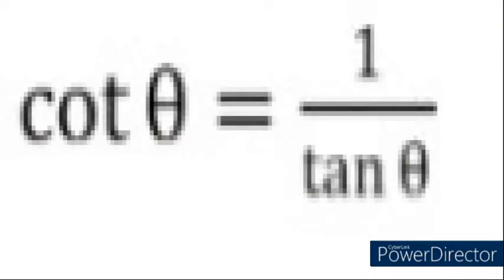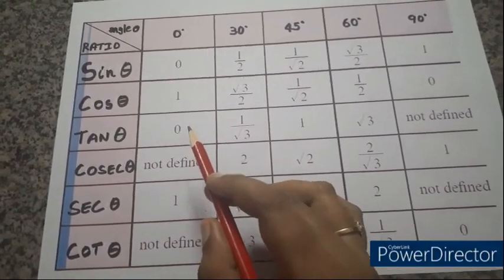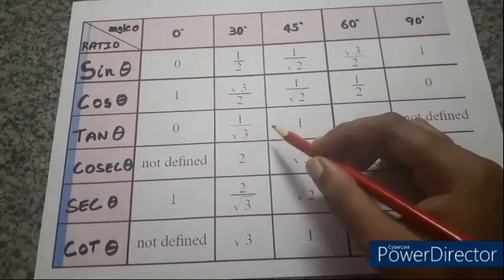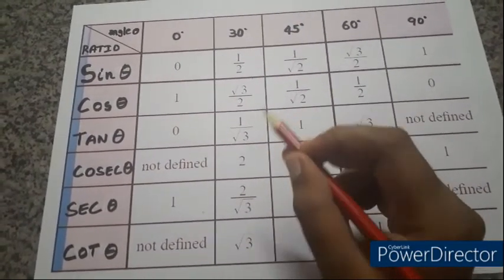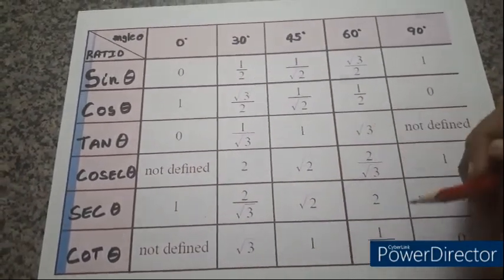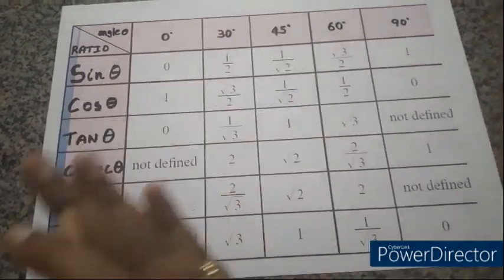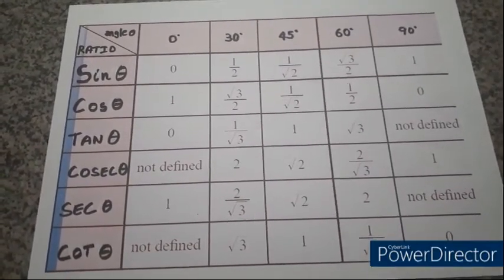Cot theta is the inverse of tan theta, or cos theta divided by sin theta. Cot 0° is not defined (inverse of tan 0° = 0, so 1/0). Cot 30°: inverse of 1/√3 is √3. Cot 45°: inverse of 1 is 1. Cot 60°: inverse of √3 is 1/√3. Cot 90°: inverse of not defined (infinity) is 0.